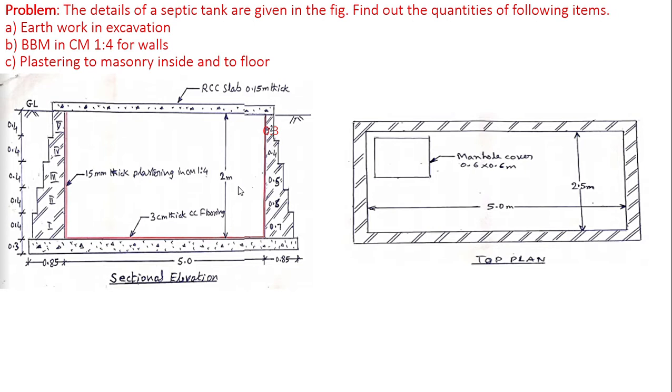Septic tank usually consists of brick wall in cement mortar and the foundation floor are of cement concrete 1:3:6. Both the inside wall faces and the floor are plastered with a minimum thickness of 15 mm.